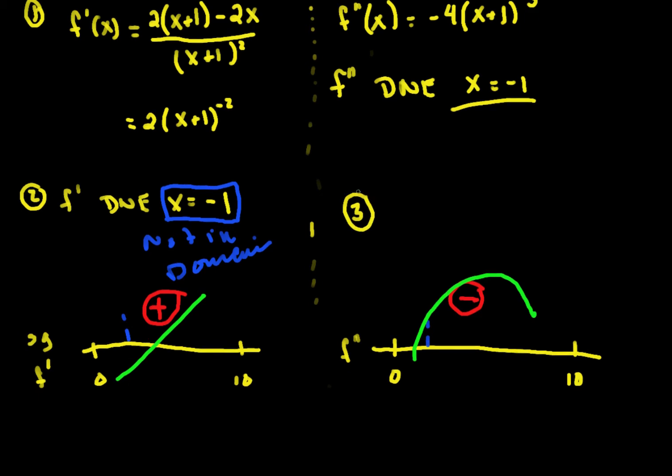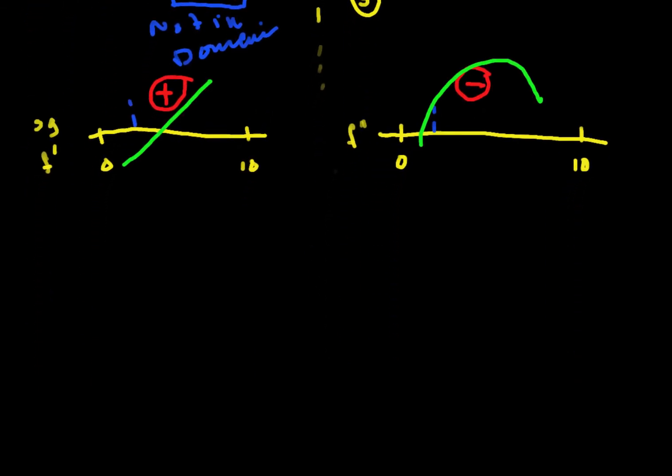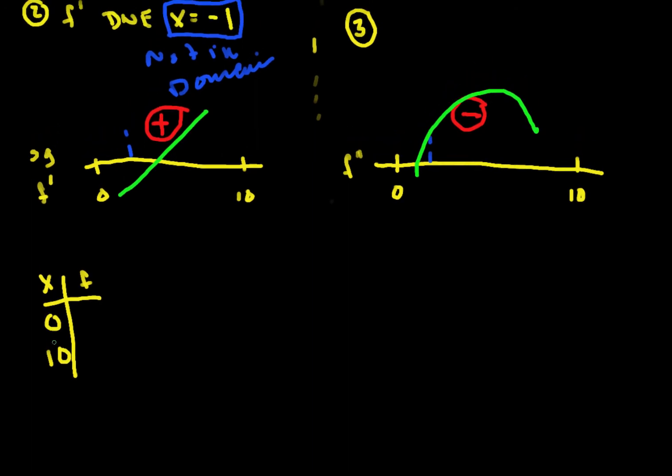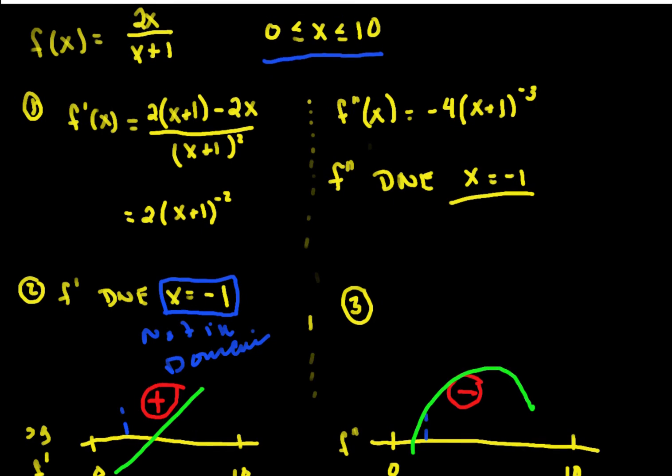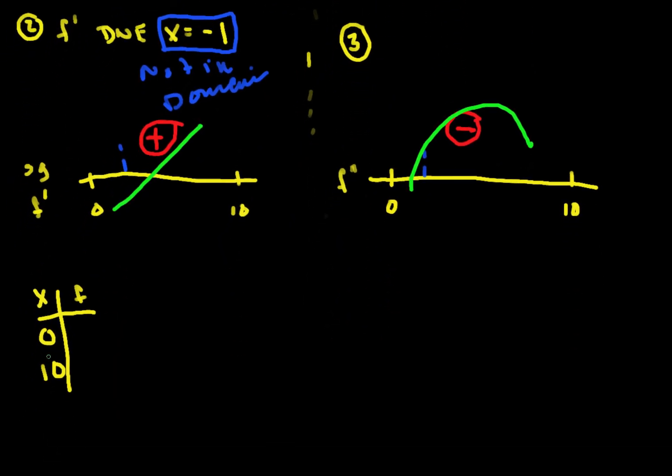So then step 4, we evaluate it at the key points. Well, there aren't very many key points since we just can look at the endpoints, really. And at the endpoints, we're going to have 0 and 10. If we put 0, so again, our function is 2x over x plus 1. If we put a 0 in here, we get a 0. If we put a 10 in there, we're going to get a 20 over 11.